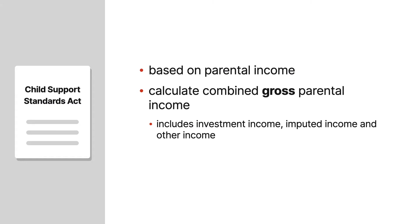Gross income includes investment income, imputed income — which we'll talk about a little bit — and just about every other type of income that you can think of. They're really trying to include anything that you can think of. We start with the gross income, and then from there we take some very limited deductions.